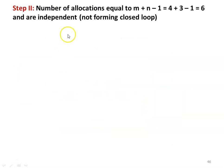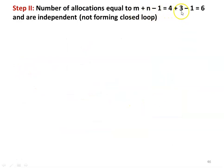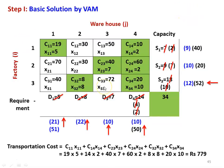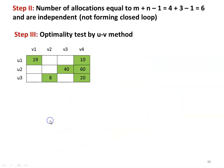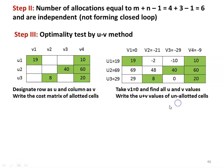Now we check for optimality. First, we verify that the number of allocations equals m plus n minus 1. There are 3 rows and 4 columns, so m equal to 3 and n equal to 4, giving 3 plus 4 minus 1 equal to 6 independent allocations that are not forming a closed loop. We designate the rows as U1, U2, U3 and the columns as V1, V2, V3, V4, and write the cost matrix of the allotted cells. We take V1 equal to 0.